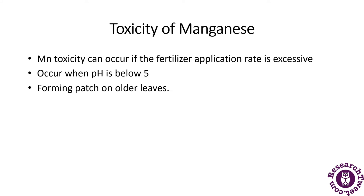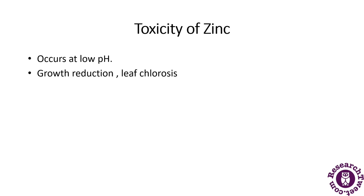Manganese toxicity can occur if the fertilizer application rate is excessive. It occurs when the pH is 5 or below 5, and it produces a forming patch on the older leaves.